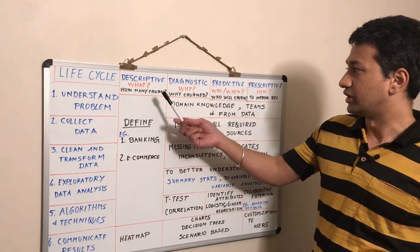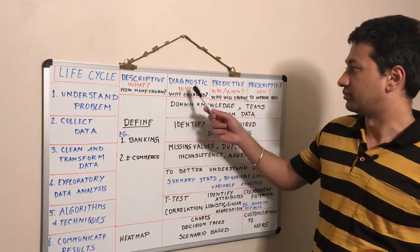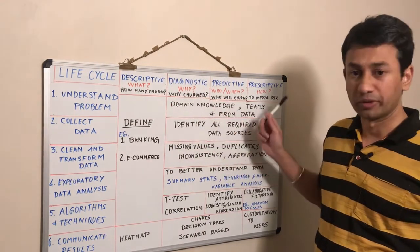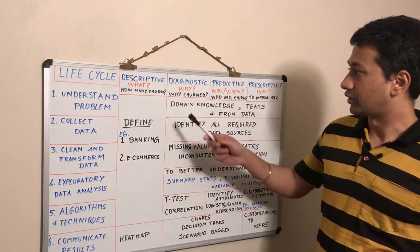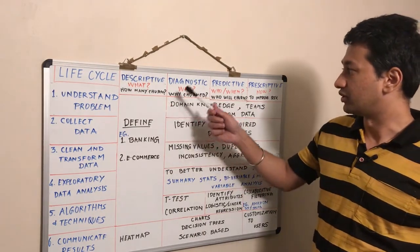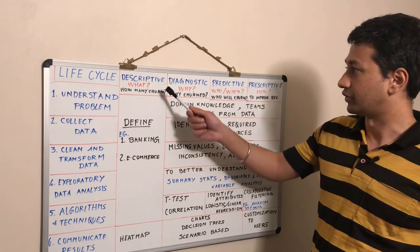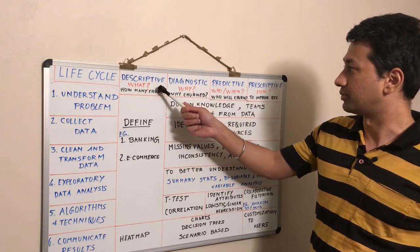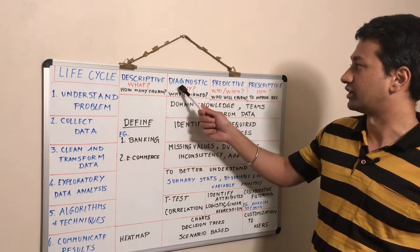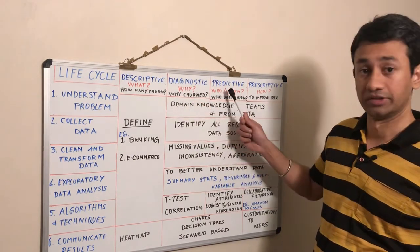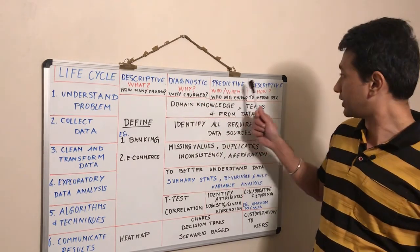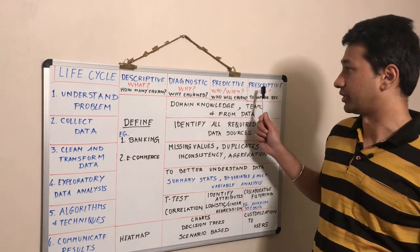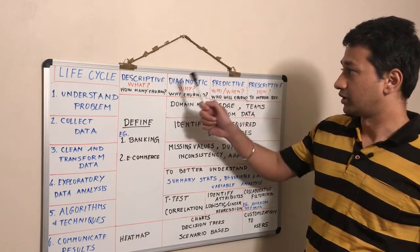Now let's go through the analytics maturity model. There are four stages in the maturity model. The first one is descriptive, second diagnostic, third predictive, and fourth prescriptive.